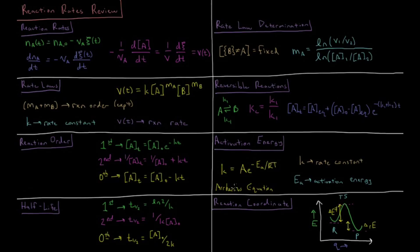Activation energy comes from the Arrhenius equation. Activation energy is the energy which must be achieved to go from a reactant to a transition state, and it tells us how the rate constant changes as a function of temperature. The rate constant equals some pre-exponential factor times e^(−Ea/RT), where K is the rate constant and Ea is the activation energy. A fairly small change in activation energy results in a very large change in the rate constant due to this exponential dependence.